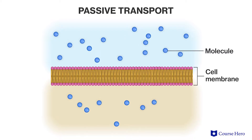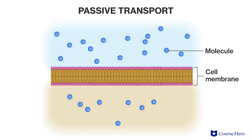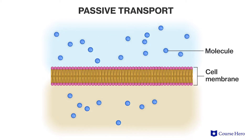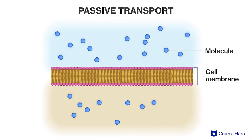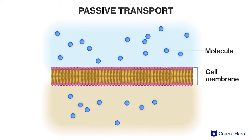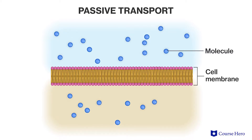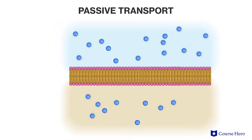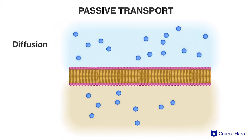Because the energy to move these molecules comes from the molecules themselves, passive transport does not require the cell to expend its own energy in their movement. Even though each molecule moves randomly, the movement or diffusion of a group of molecules may be directional. Small molecules move across the membrane down their concentration gradient through the process of diffusion.